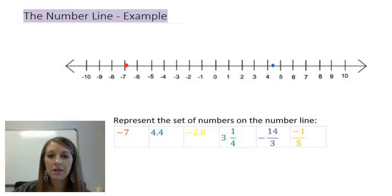The next number is negative 2.8, so it's going to be on the left-hand side with the negative. I'm going to go past negative 2, almost to negative 3, because 0.8 is close to negative 3. So there is my yellow representation of that number there.